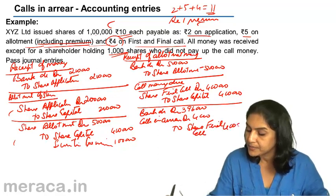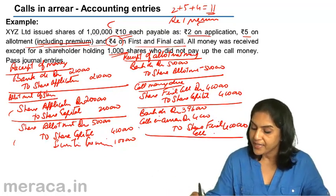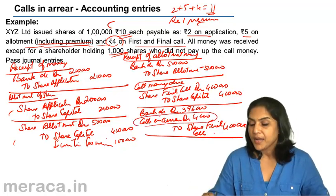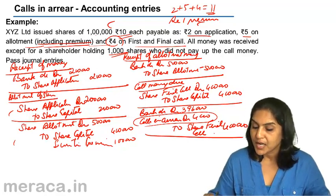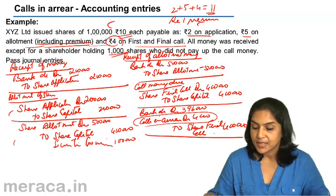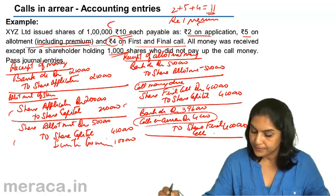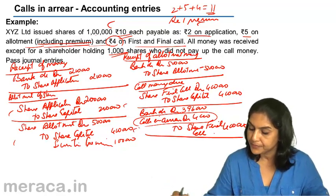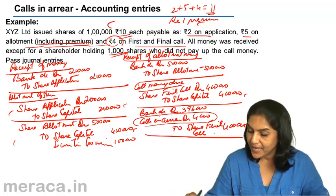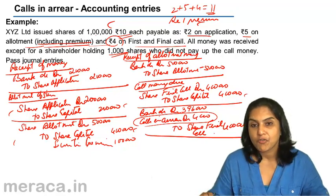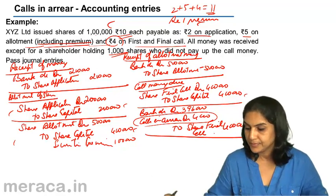With this, the final call account gets closed and calls in arrears would be shown in the balance sheet. Share capital comes to 2 lakh + 4 lakh + 4 lakh = 10 lakhs. In the balance sheet, we show 10 lakhs less calls in arrears 4,000 = 9 lakh 96,000, which is the paid-up capital.